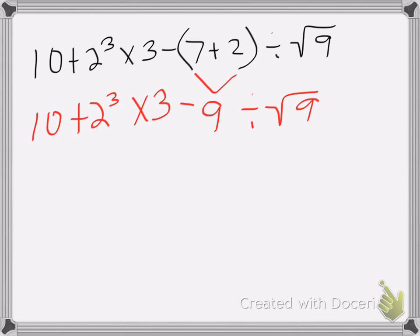Minus nine divided by the square root of nine. Okay, next thing we do is powers and roots. So two cubed is eight, square root of nine is three. Now drop the rest of it. Ten plus eight times three minus nine divided by three.